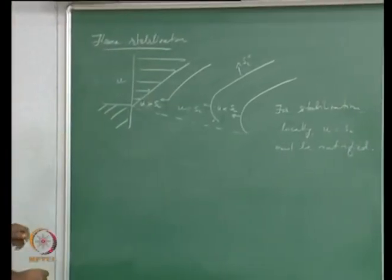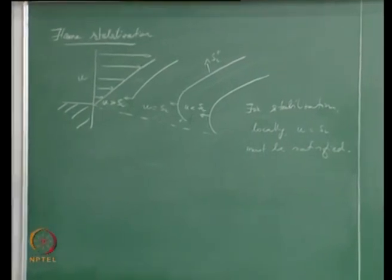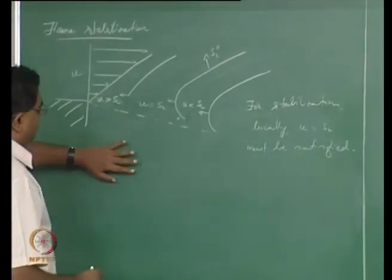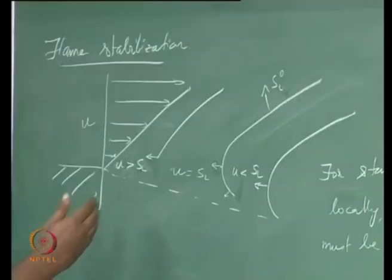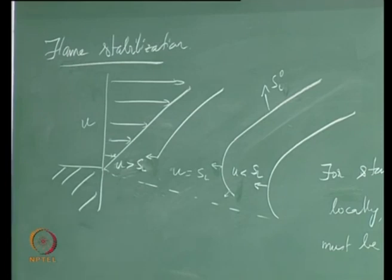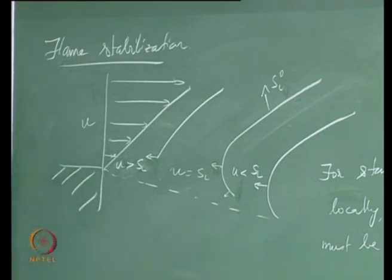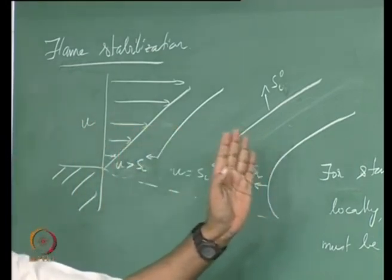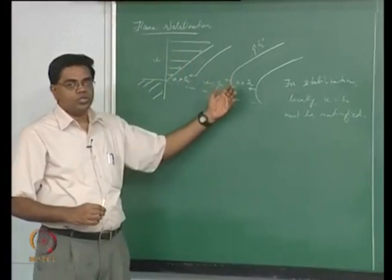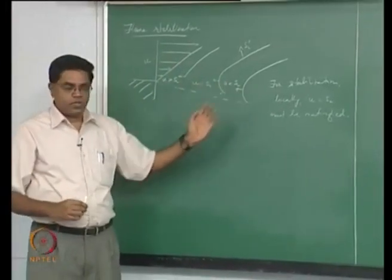For a fuel lean flame, if air is coming in and diluting it, that is going to decrease SL further. Keep in mind that as you get closer to the burner, the decrease in flame speed is more due to heat loss and less due to dilution. As the flame goes further away from the burner, the decrease in SL0 is more due to dilution and less due to heat loss.